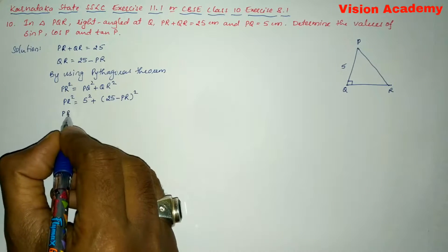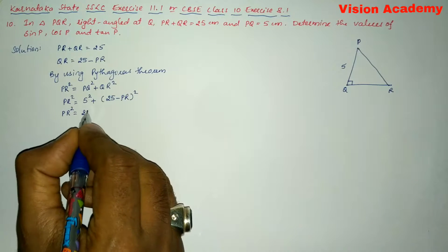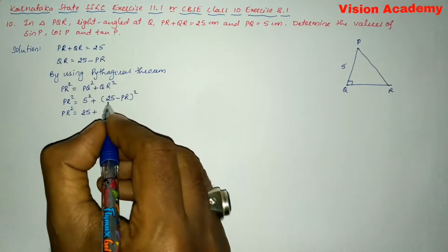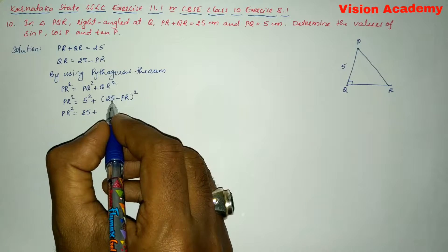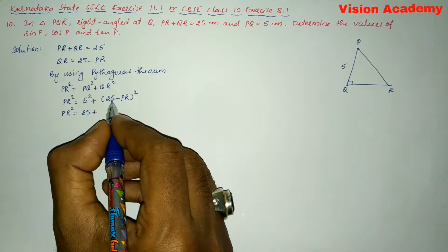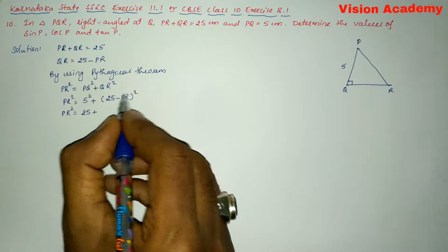Now let us further simplify. PR square is equal to 5 square is 25 plus this is in the form of A minus B whole square. We can expand this one as identity A square minus 2AB plus B square.